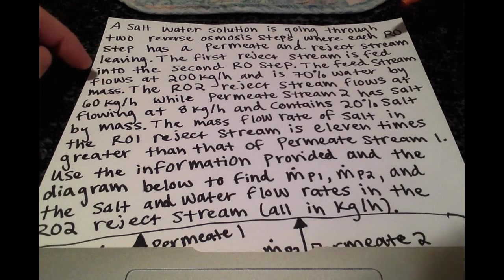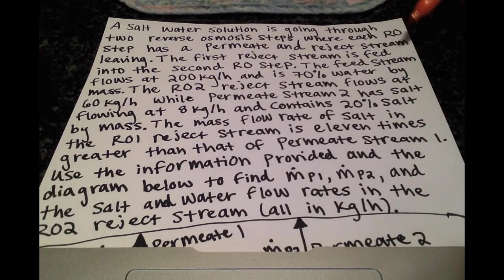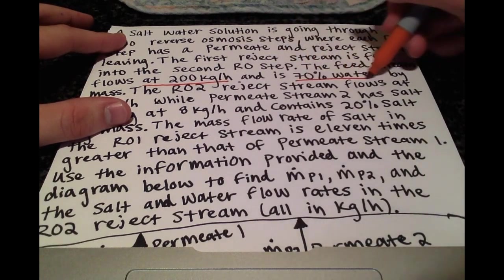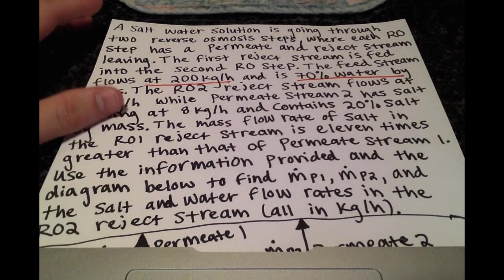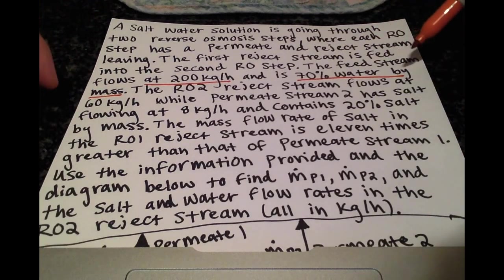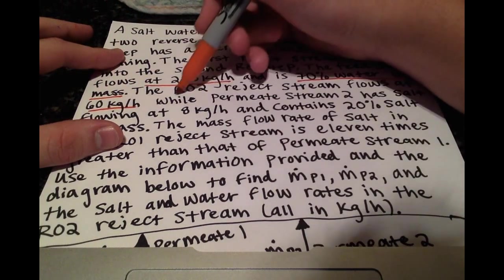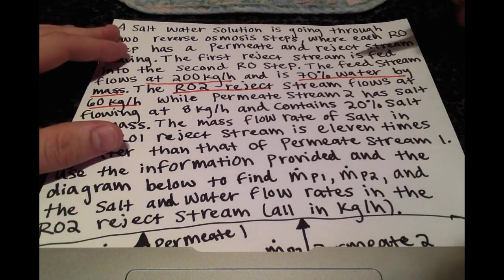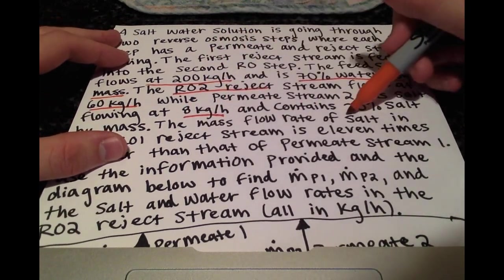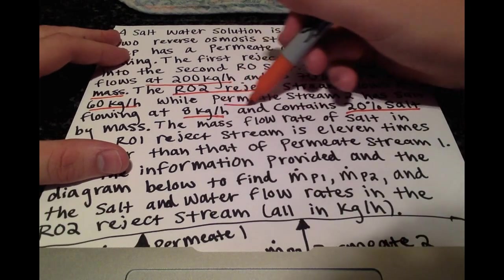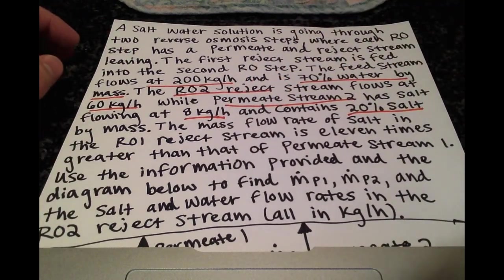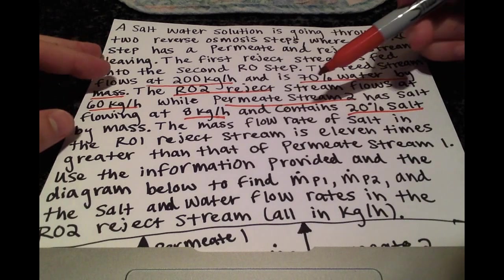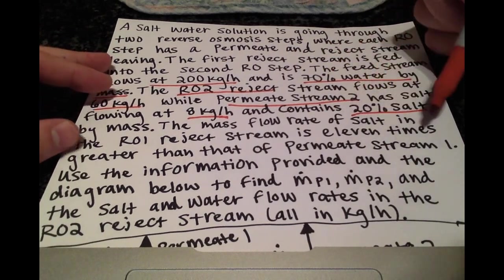The first reject stream is fed into the second RO step. Our feed stream flows at 200 kilograms per hour and is 70% water by mass. The RO2 reject stream flows at 60 kilograms per hour while permeate stream 2 has salt flowing at 8 kilograms per hour and contains 20% salt by mass. We're also told that the mass flow rate of salt in the RO1 reject stream is 11 times greater than that of permeate stream 1.